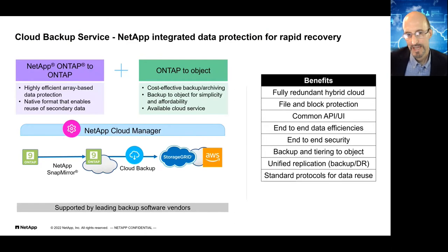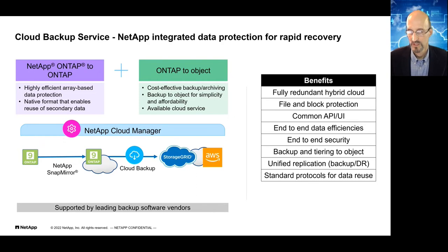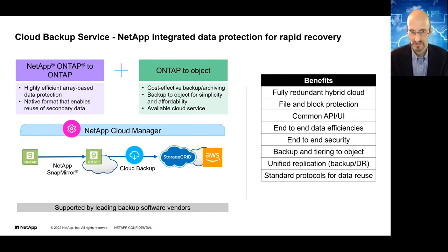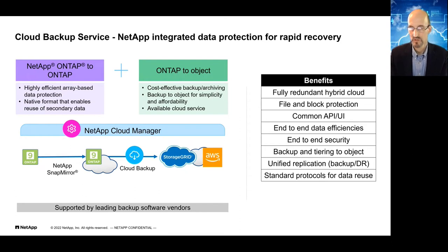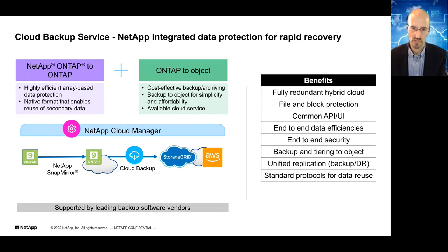Cloud Backup Service is another NetApp service for backing up ONTAP volumes — it can look at any ONTAP volume in the cloud and even on-premise, backing up to an object target like AWS S3 or StorageGRID on-premise. Cloud Backup gives you a second redundant separate copy of data to recover from a cyber or ransomware attack, accidental deletion, or disaster. It provides a single pane of glass, menu-driven interface to do a level-zero backup and then incrementals forever, letting you search files and directories to restore right in the interface.